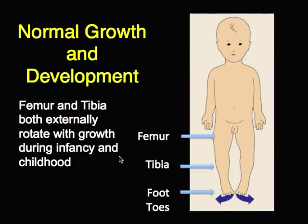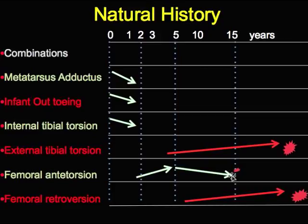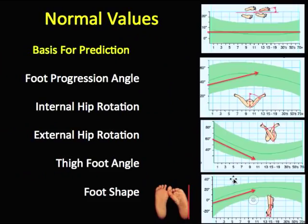In normal growth and development, both the femur and the tibia externally rotate — this is a normal pattern. Metatarsus adductus gets better usually in the first couple of years. Internal tibial torsion gets better over the first four or five years. Femoral anteversion tends to get worse during early childhood, peaks in mid-childhood, and then tends to get better and resolves in nearly all cases.